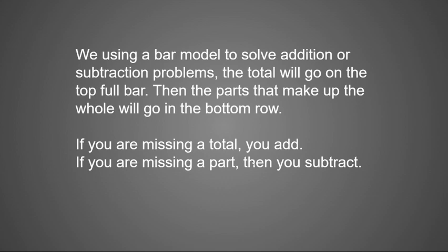When we use a bar model to solve addition or subtraction problems, the total is going to go on the top full bar. Then the parts that make up the whole will go in the bottom row. The main thing you need to know is that if you're missing a total, you will need to add your two parts. If you're missing a part, you're going to need to subtract the part that you have from your total — it just made solving addition or subtraction word problems that much easier.